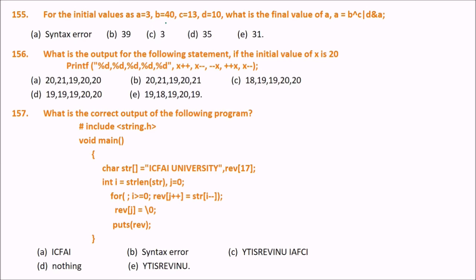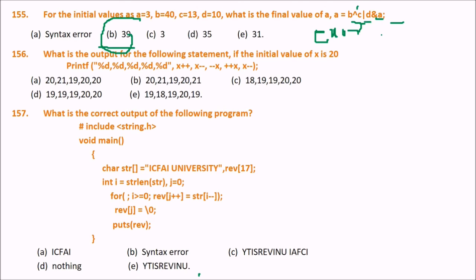For initial values a=3, b=40, c=13, d=10, what is the final value using bitwise operations? The answer is 39. This is left as an exercise, but here is the hint: XOR has the highest precedence, followed by AND, then OR. Find the binary representation of each value, compute XOR of b and c, then AND with d and a, then OR the results to get 39.